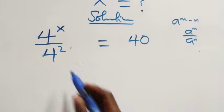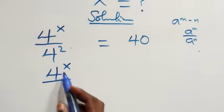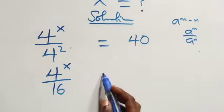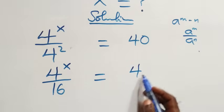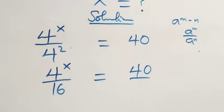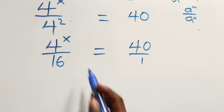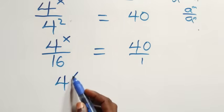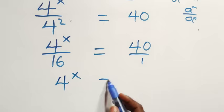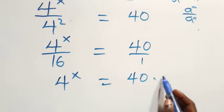We can write this as 4 raised to power x over 4 squared — that's 16 — equals 40 over 1. The next step, we cross-multiply here: 4 raised to power x times 1, which is the same thing as 4 raised to power x, equals 40 times 16.